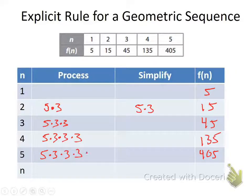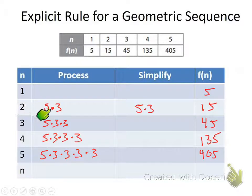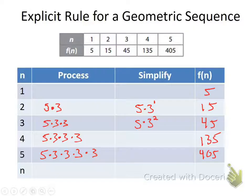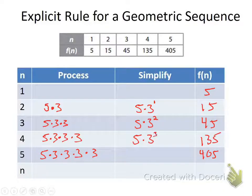For the fifth term, we're multiplying by three four times. When we simplify, we see the pattern: the second term is 5 times 3 (just once), the third term is 5 times 3 squared, the fourth term is 5 times 3 to the third, and the fifth term is 5 times 3 to the fourth.